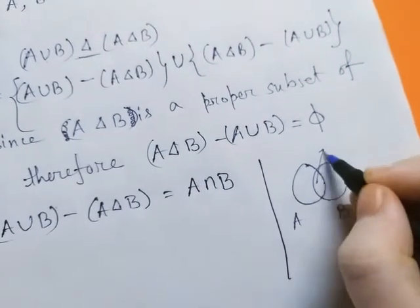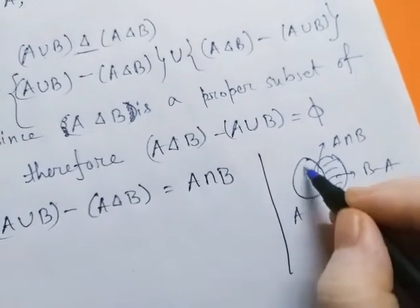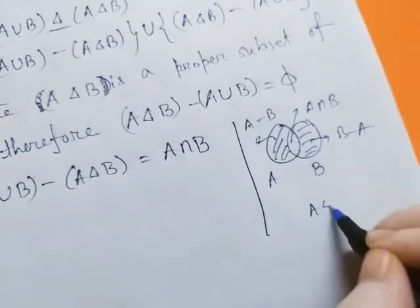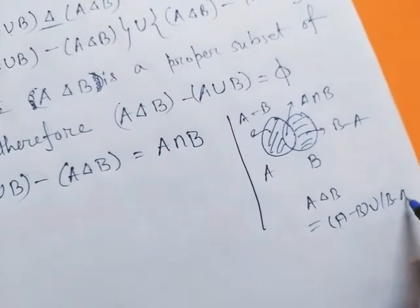Suppose this is A, this is B, then this is A intersection B. This is B minus A, this is A minus B. Now we know A delta B equals simply A minus B union B minus A.